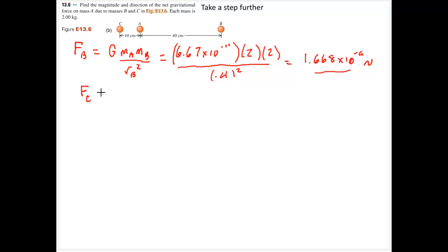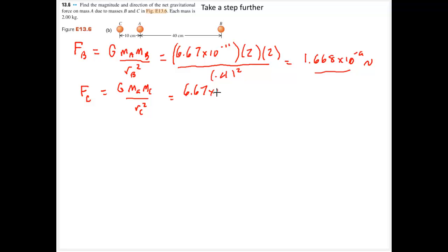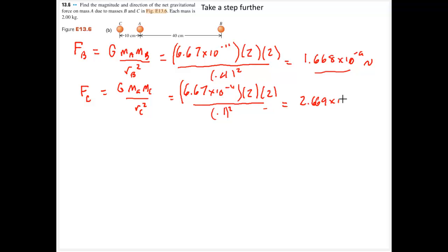The force due to particle C on A uses the same formula: big G times mass of A times mass of C divided by the distance to C, quantity squared. So 6.67 times 10 to the negative 11th, masses are both 2, and they are 0.1 meter apart. Squaring that distance gives 2.669 times 10 to the negative 8 newtons. I'll make this negative because I expect that force to be in the negative x direction.